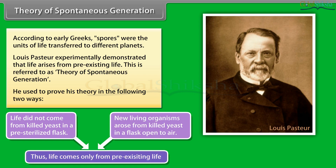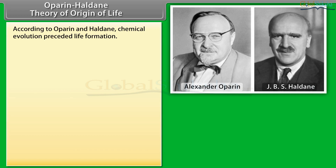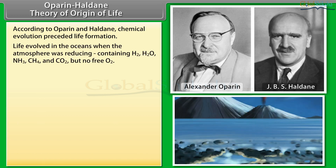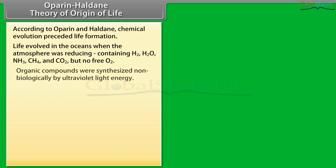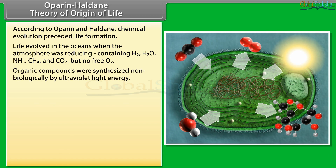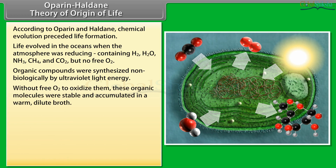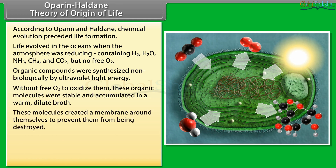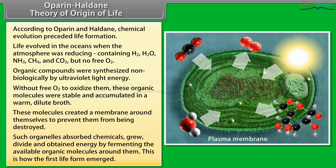Thus, life comes only from pre-existing life. According to the Oparin-Haldane theory of origin of life, chemical evolution preceded life formation. Life evolved in the oceans when the atmosphere was reducing, containing H2, H2O, NH3, CH4 and CO2 but no free O2. Organic compounds were synthesized non-biologically by ultraviolet light energy. Without free O2 to oxidize them, these organic molecules were stable and accumulated in a warm dilute broth. These molecules created a membrane around themselves to prevent destruction. Such organelles absorbed chemicals, grew, divided and obtained energy by fermenting the available organic molecules around them. This is how the first life form emerged.